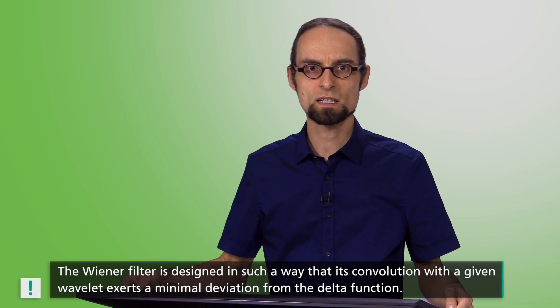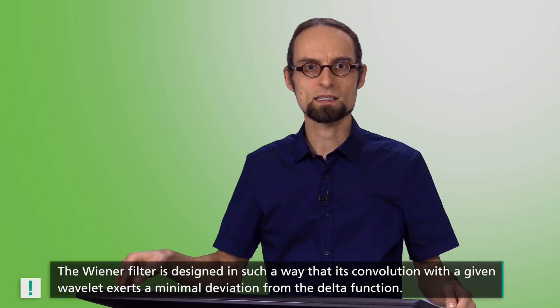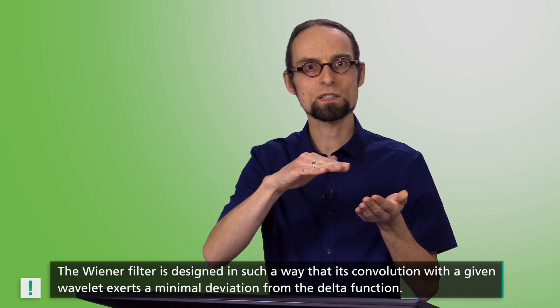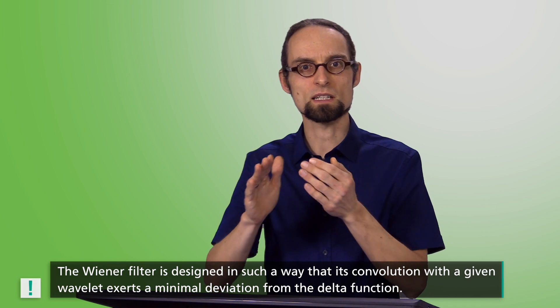Practically, the wavelet cannot be transformed into a perfect delta function. But one could try to approximate it. Norbert Wiener in the 1940s developed one such filter through curve fitting using the least squares method. The so-called Wiener filter is designed in such a way that its convolution with a given wavelet exerts a minimal deviation from the delta function. The Wiener filter deduced in this way now allows the seismic profile to be deconvolved without knowing the exact origin of the interference signals.